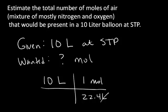And so you can solve for moles in this way, and you end up with 0.45 moles of the air in that 10 liter balloon. That makes sense, because we know that one mole occupies 22.4 liters. So if we cut our volume in half, we'll cut our amount about in half, and so it's about 0.45 moles.